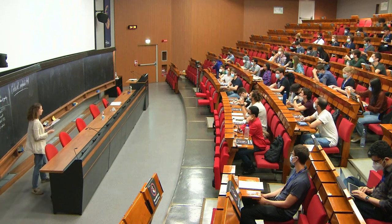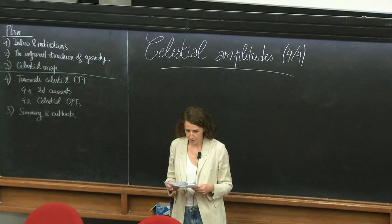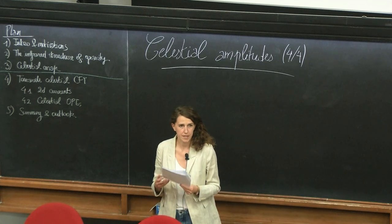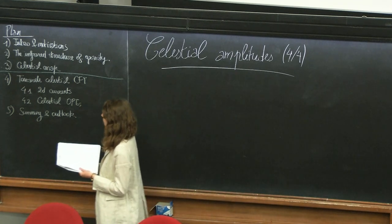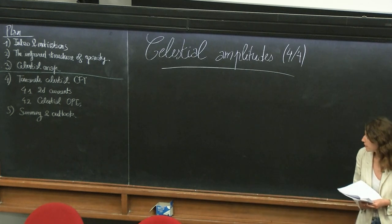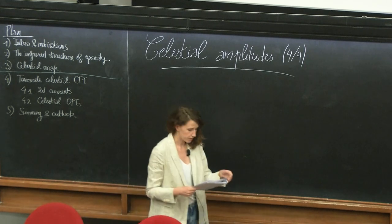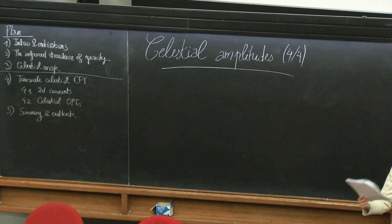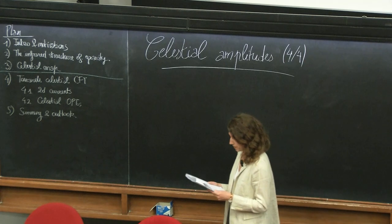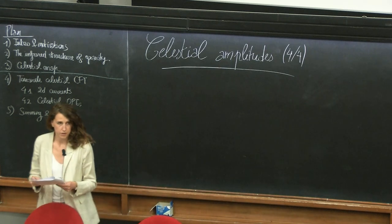Good afternoon, thanks for coming to this last lecture on celestial holography and celestial amplitudes. Today the plan is, now that we have introduced all that we needed, to show you how celestial amplitudes are real two-dimensional currents that appear in celestial conformal field theory. We will discuss features of celestial operator product expansions, give a broad overview of what we have achieved so far, which are the big open questions, and what is the big picture we want to achieve.